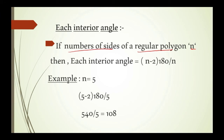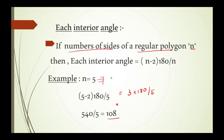Let me show you with an example. Here I have taken n equals 5. Substituting: 5 minus 2 into 180 degrees by 5. That gives 3 into 180 degrees by 5, which is 540 divided by 5, equal to 108 degrees. So each interior angle of a regular pentagon is 108 degrees.